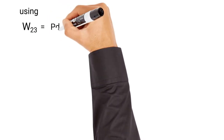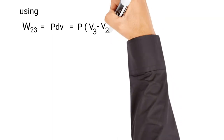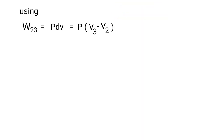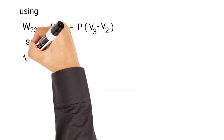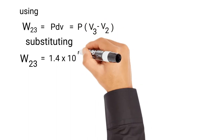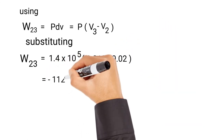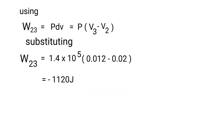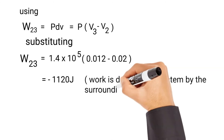Now, in process 2→3, since the pressure is constant we don't need to integrate. W₂₃ = P(V3 − V2) = 1.4 × 10⁵ × (0.012 − 0.02) = −1120 J. The negative sign means work is done on the system by the surroundings.